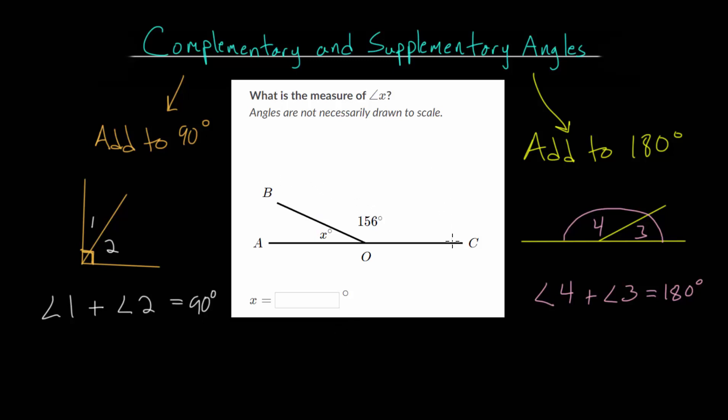Looking at this first problem, we have this straight line AOC, and it's split between two different angles. It looks like they're going to be supplementary. They're going to add up to 180, because these two angles combined make up the angle of a line. So we can determine, since they are the angles of a line, that they are supplementary to each other.